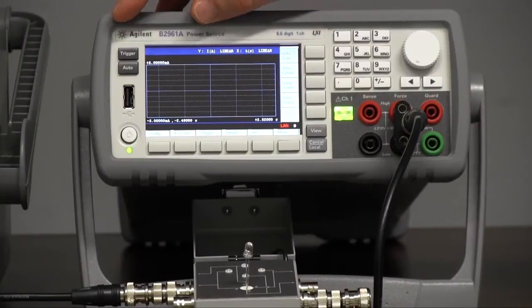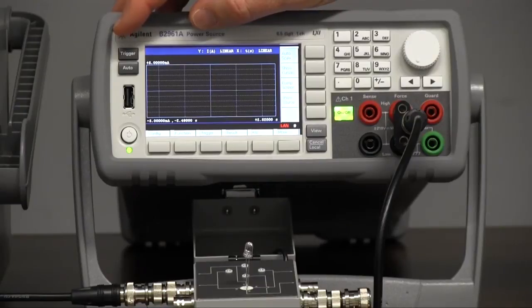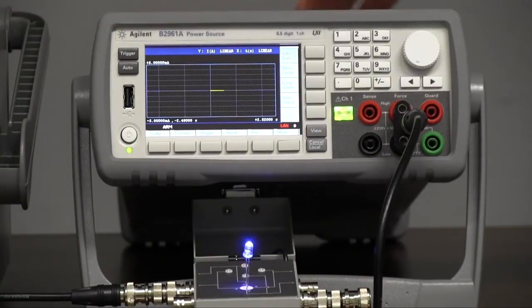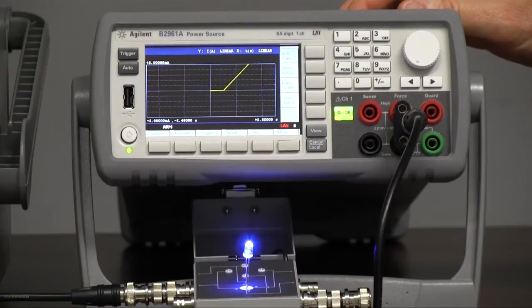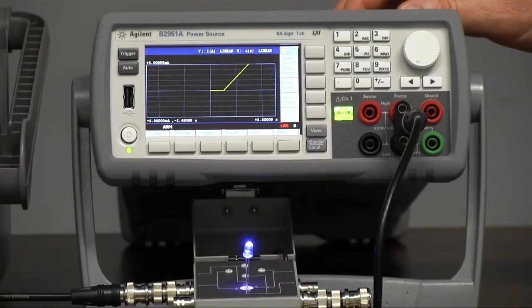So now we're going to go ahead and press the trigger button and we're going to look at the LED as it ramps three times. And you can actually see now the ramp in the view mode here and the LED is turning on. And then, of course, repeating again. And basically now it's done.